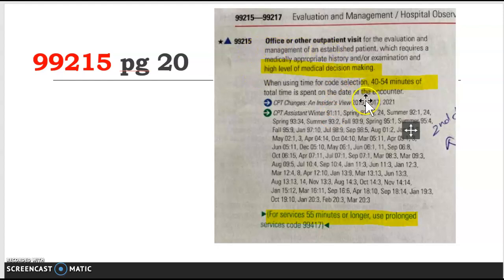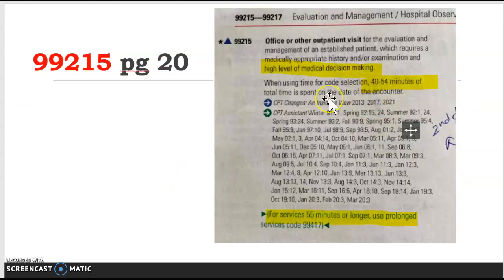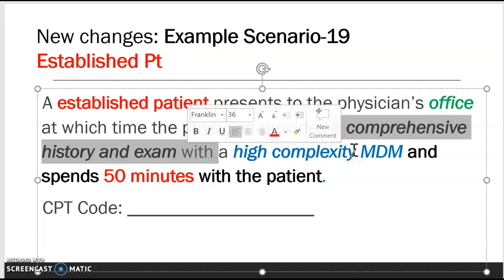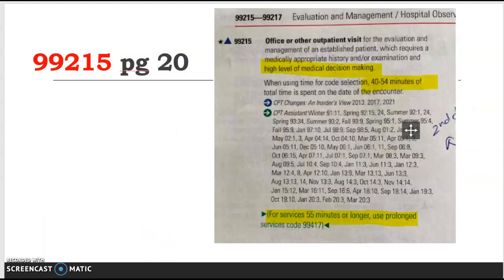When I see 99215, I see high level of medical decision making and 40 to 54 minutes. That matches — it is high complexity MDM, and 50 minutes falls within 40 to 54 minutes. This is the correct code. Remember, I don't need the comprehensive history and exam; it says medically appropriate. High complexity MDM means the patient was in severe distress, possibly needing urgent emergency care, so the history and exam could be more extensive — that is what comprehensive history and examination stands for. My final answer is 99215.